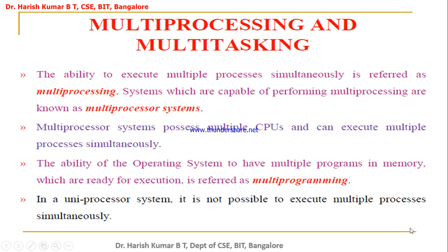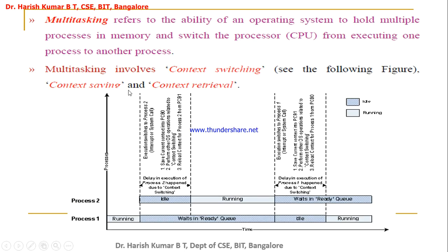Multitasking refers to the ability of the OS to have multiple processes in memory and switch the processor from executing one process to another. Multitasking involves context switching, context saving, and context retrieval. When the CPU switches from one process to another, it saves the current state of the program to its PCB and then retrieves the context of the process to execute next.